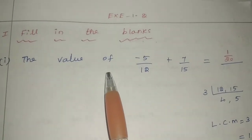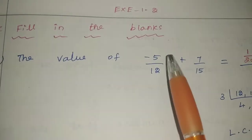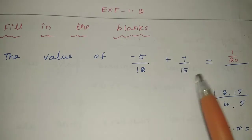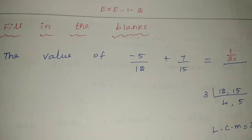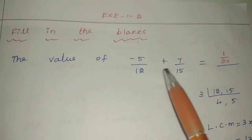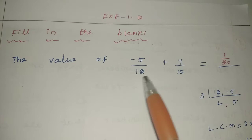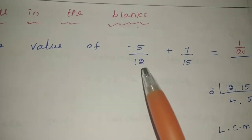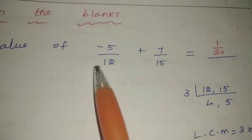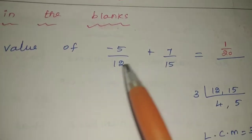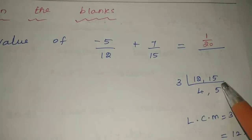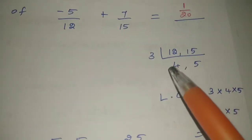The value of minus 5 by 12 plus 7 by 15 is equal to dash. First of all, how do we check the denominator? We will check if the denominators are the same. The denominators are not the same, so we find the LCM of 12 and 15.